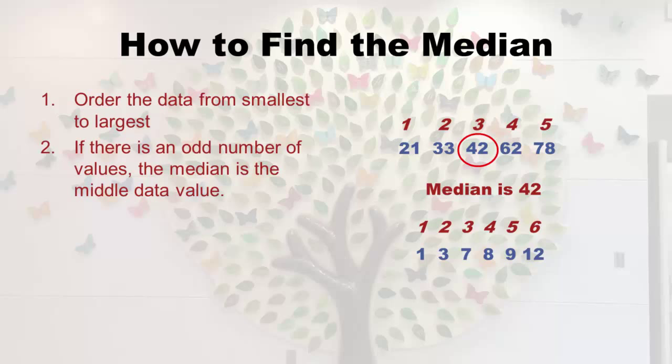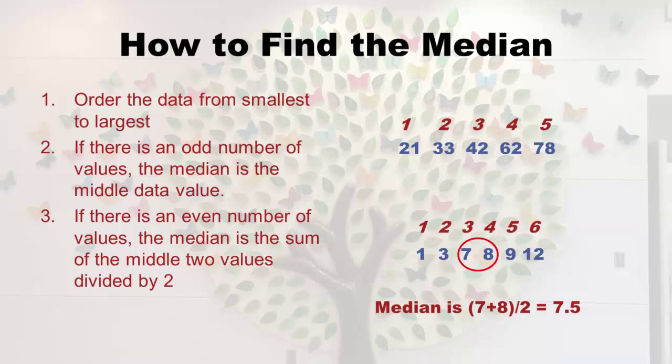For the bottom data set with six values, the positions are numbered and you go to the third and fourth position — the kind of the middle. You literally make an average of them: you add the two together and divide by two. They happen to be seven and eight, so seven plus eight divided by two is 7.5. When you do the median with an even number of values, you might get something with a decimal like 7.5, which is not in the underlying data set.